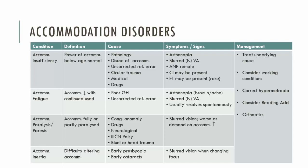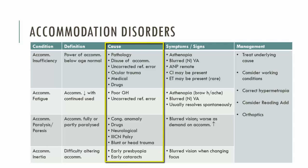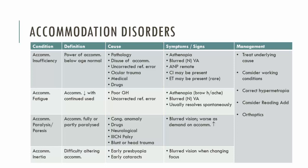In managing these patients, we firstly need to consider the underlying cause, as there are a variety of causes of accommodation disorders. Any underlying cause should be treated before considering other management options. We should also consider the working conditions of the patient and manage excessive close work where possible. If the patient is hypermetropic, correcting the hypermetropia is useful, and a reading add can assist given their deficient accommodation. Orthoptic exercises such as flippers can also be considered.